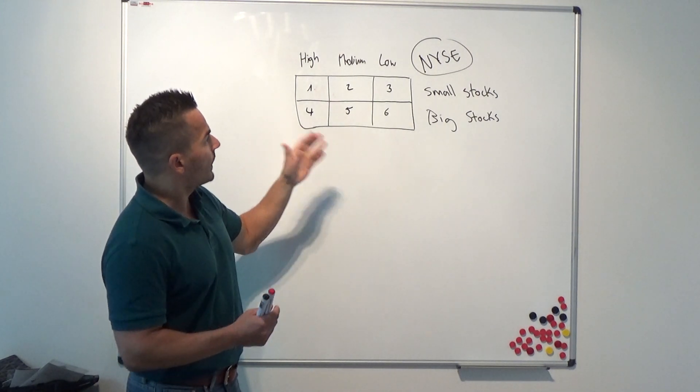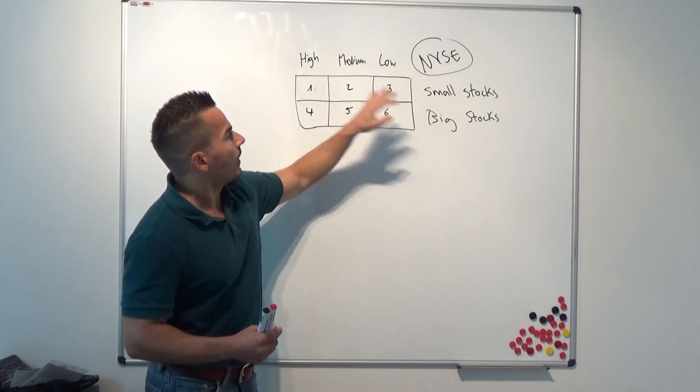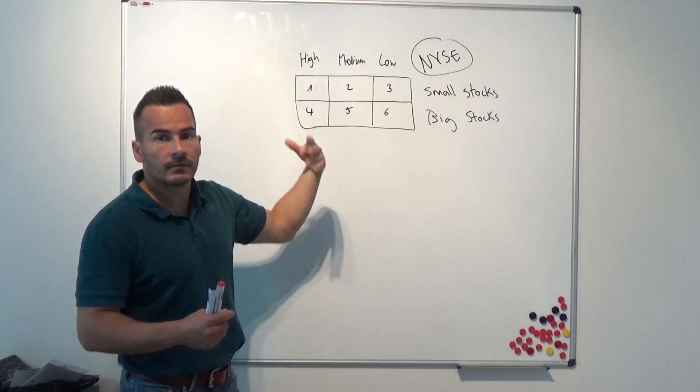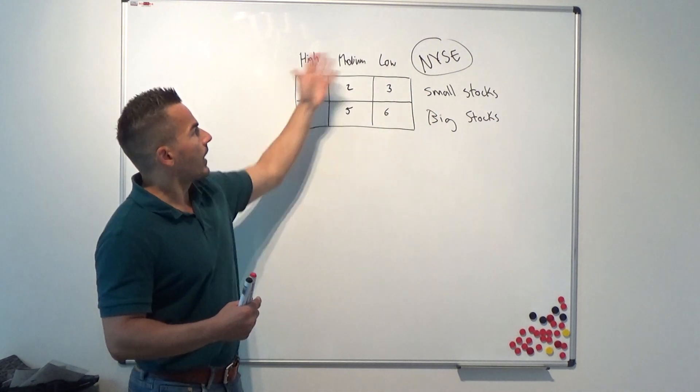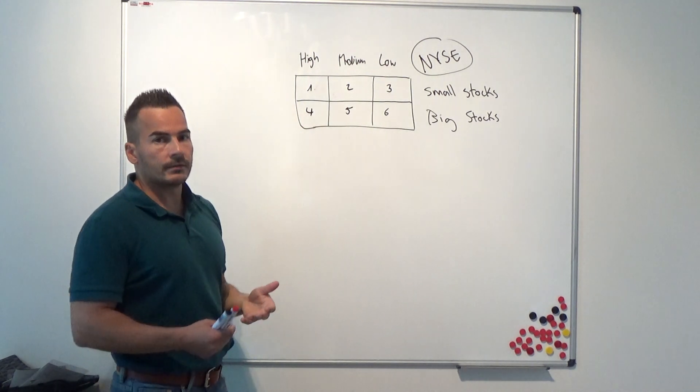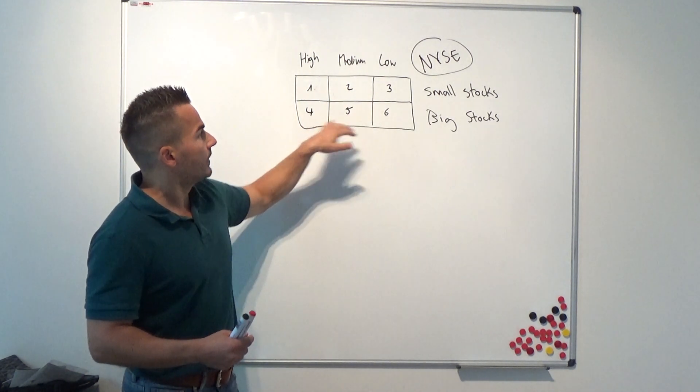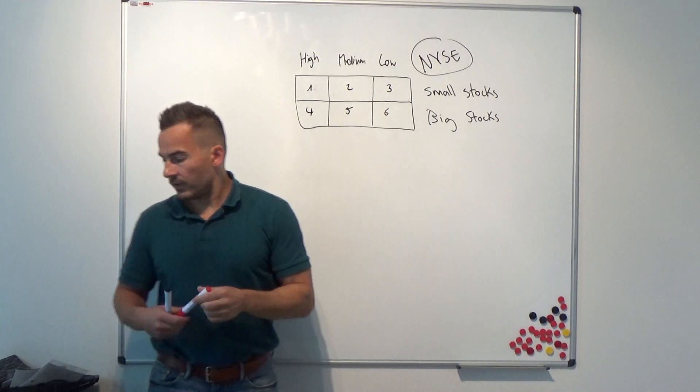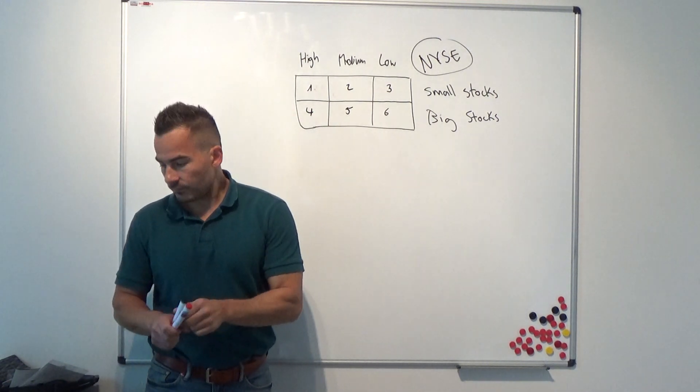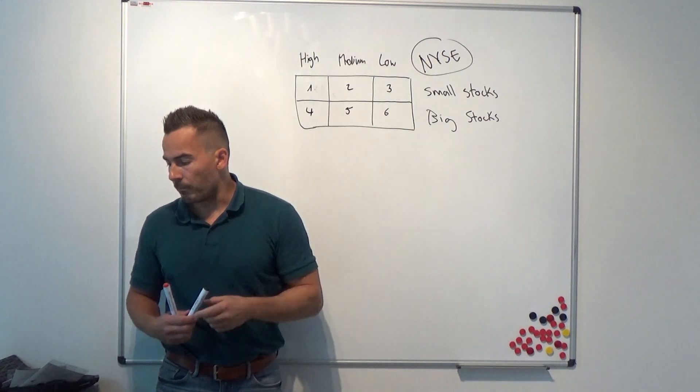Why is that so? Well, because these two characteristics, like market capitalization or size of the company and book-to-market ratio, are correlated. So you will not have equal amount of stocks in each group, but this will vary. That's just something that you should have in mind.